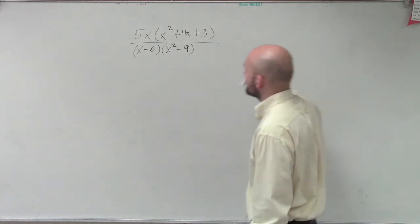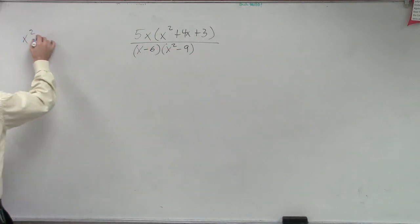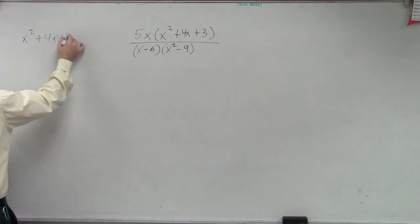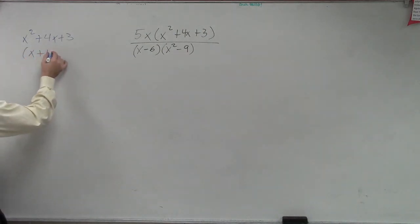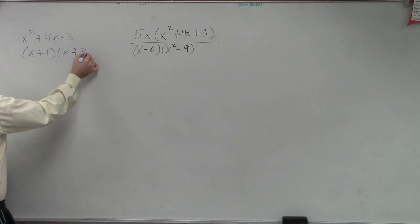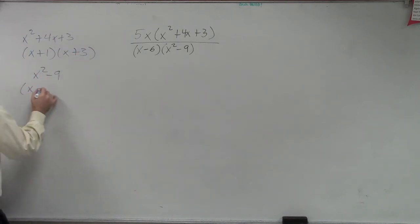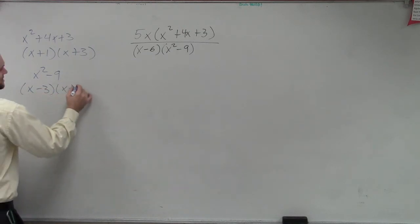We have x squared plus 4x plus 3 we can factor, right, and that can factor into x plus 1 times x plus 3. And then we have another one, x squared minus 9 we can factor, which is x minus 3 times x plus 3.